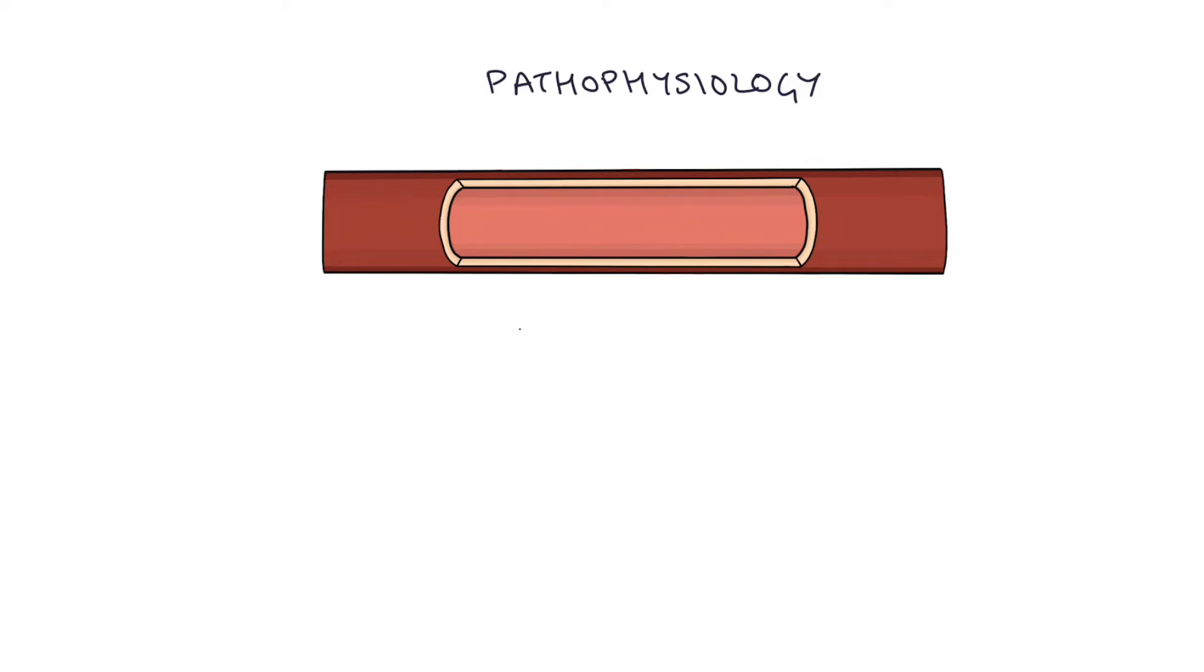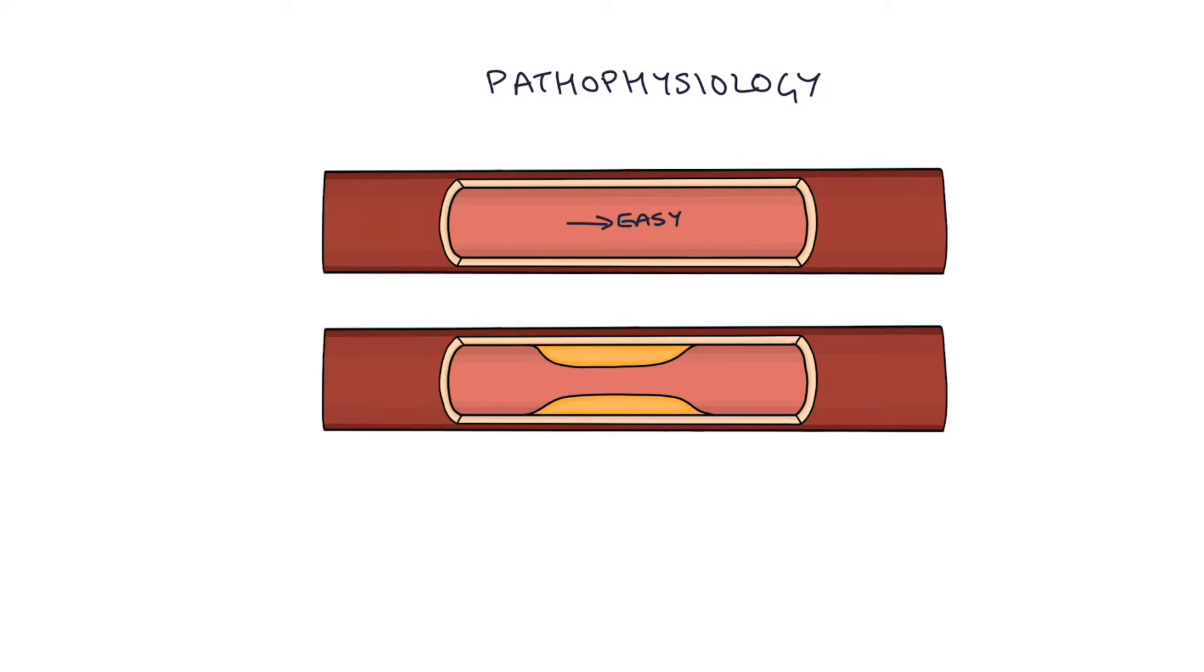So if you imagine it like a pipe, the blood can flow very easily through this blood vessel. When you have a blood vessel that's developed atherosclerosis, what happens is chronic inflammation and activation of the immune system